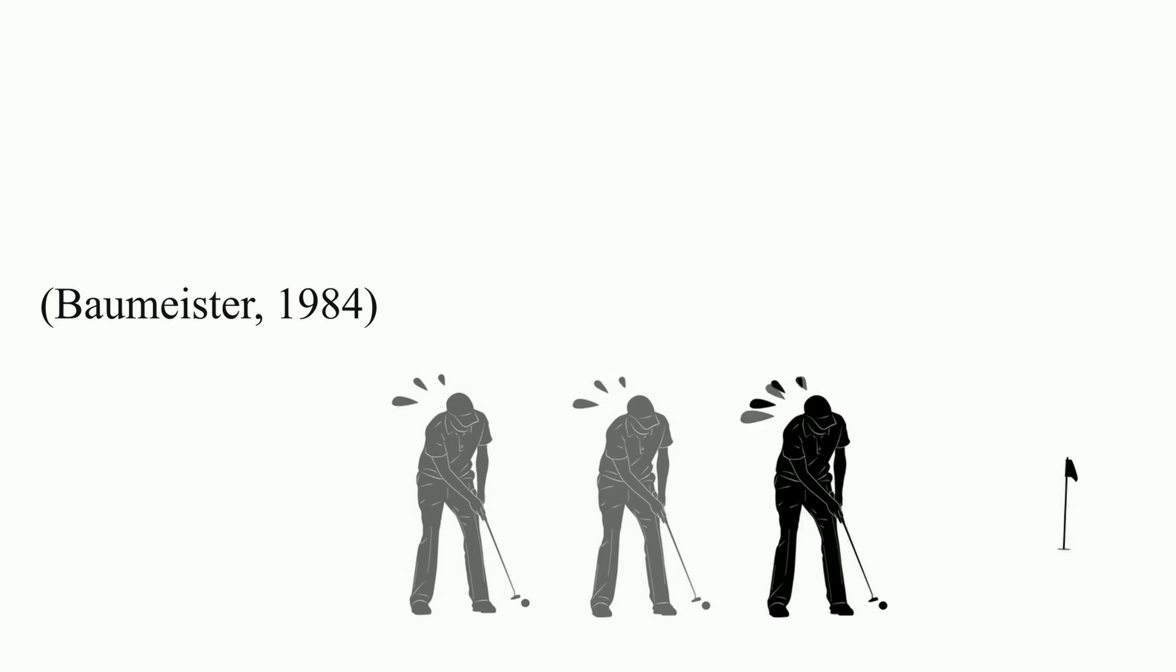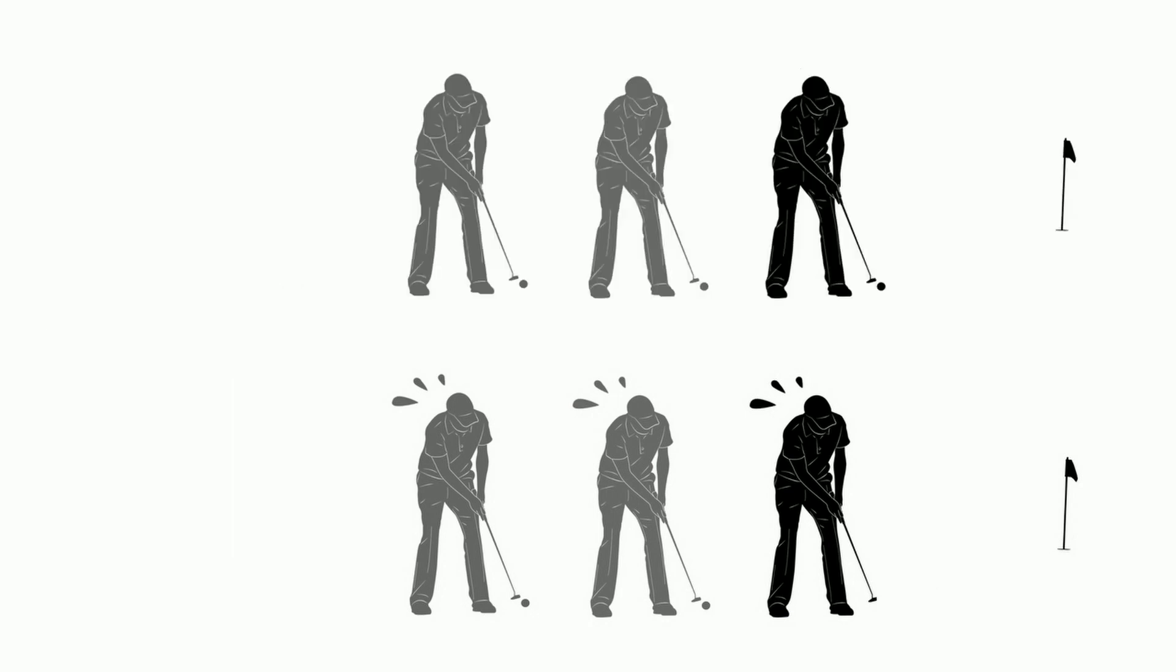This model helps account for phenomena wherein people who are normally more self-conscious are less likely to be disrupted or choke under pressure. In contrast, people who are normally un-self-conscious are more likely to choke.